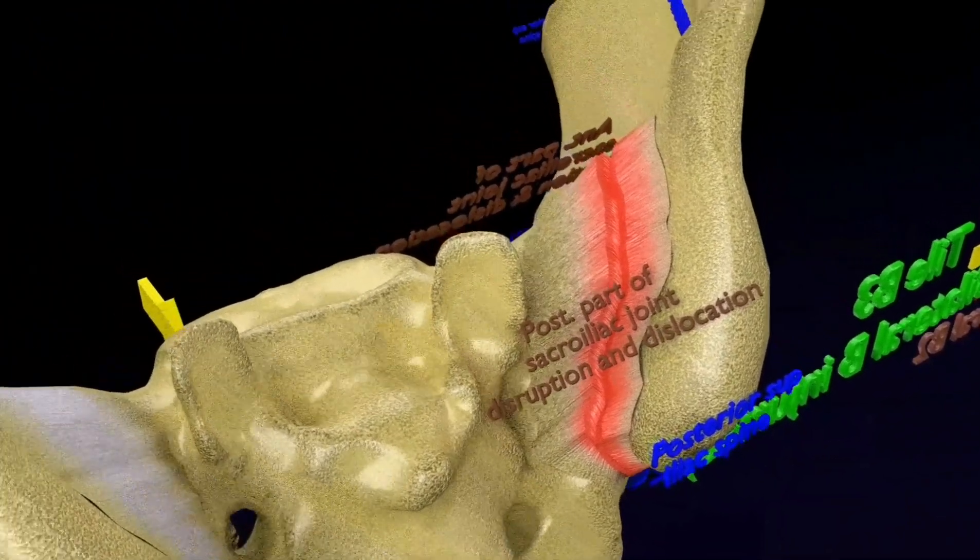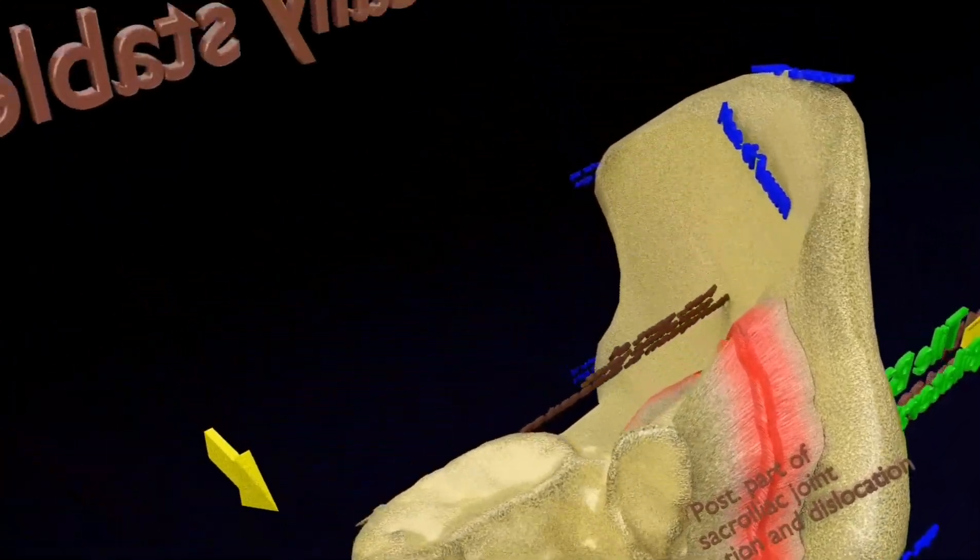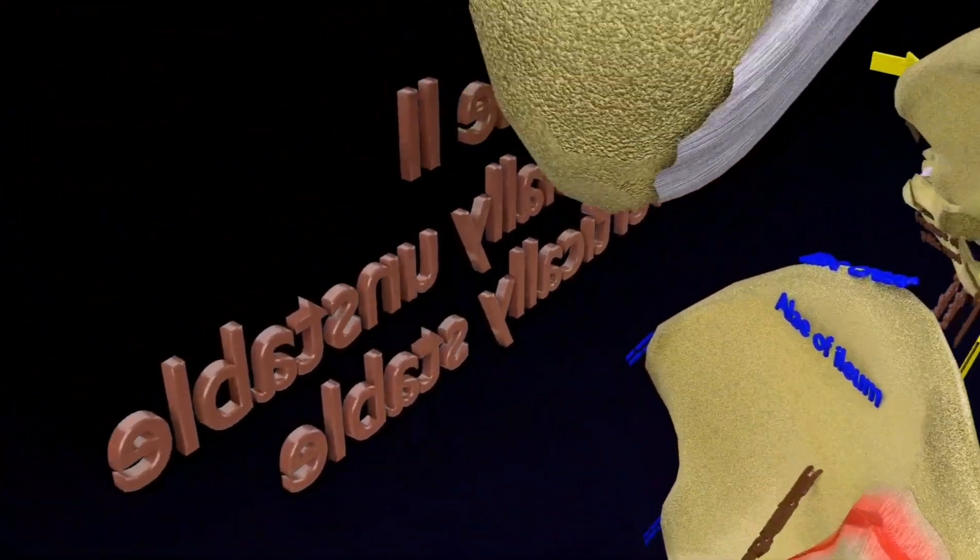Now, going on to the third type of Young and Burgess classification, that is vertical shear.